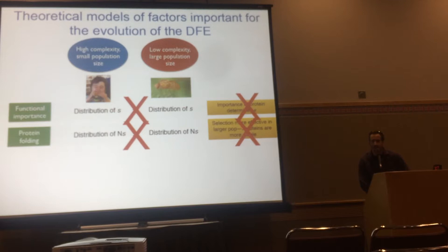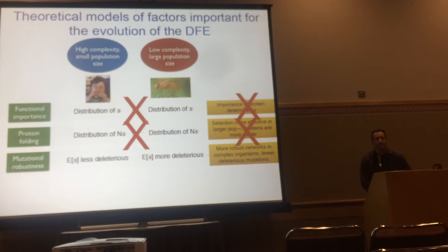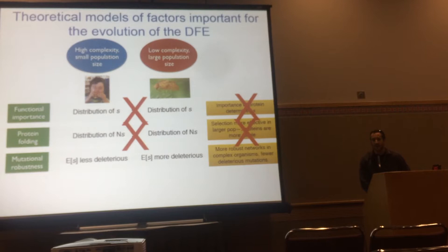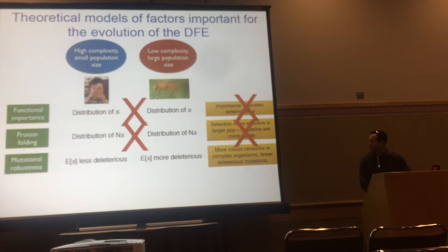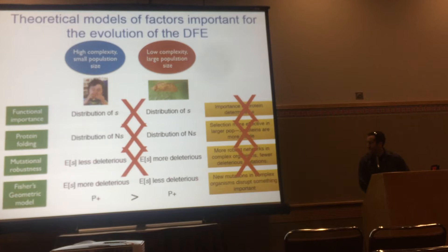That rejects the model where NS is the same across species. Looking at the mutational robustness model, which predicts the average selection coefficient ought to be less deleterious in the more complex species — in fact, our results went in the opposite direction, where the average selection coefficient was actually more deleterious in the more complex species.